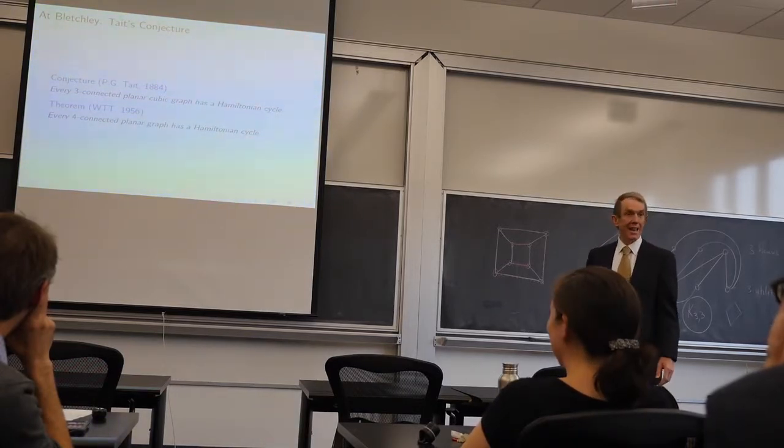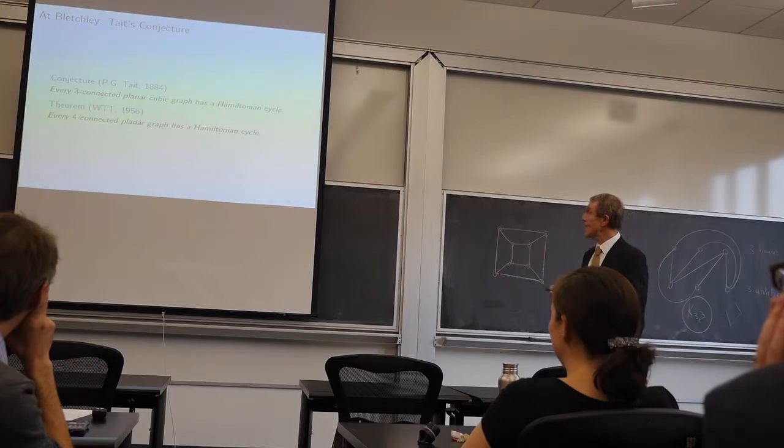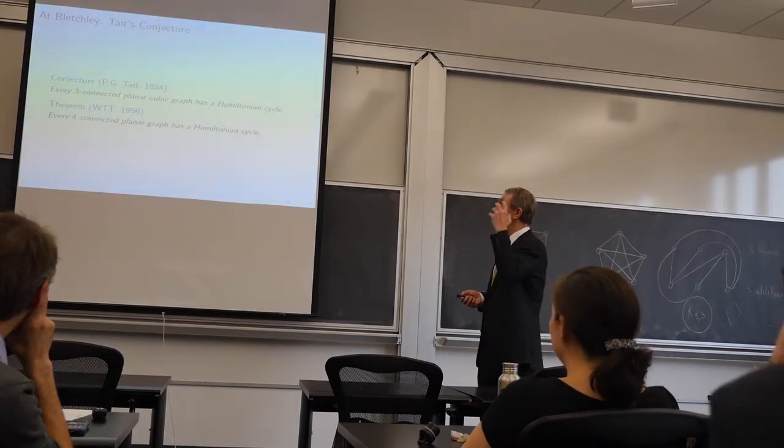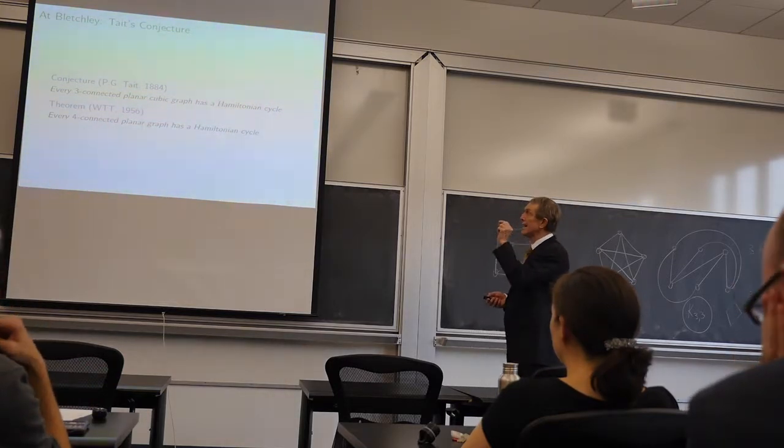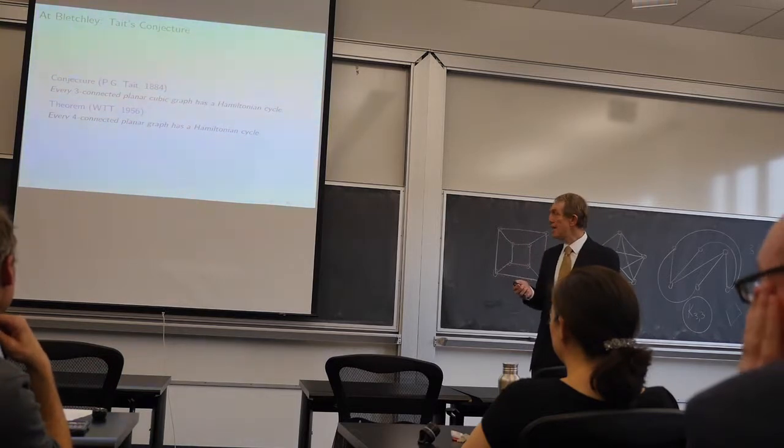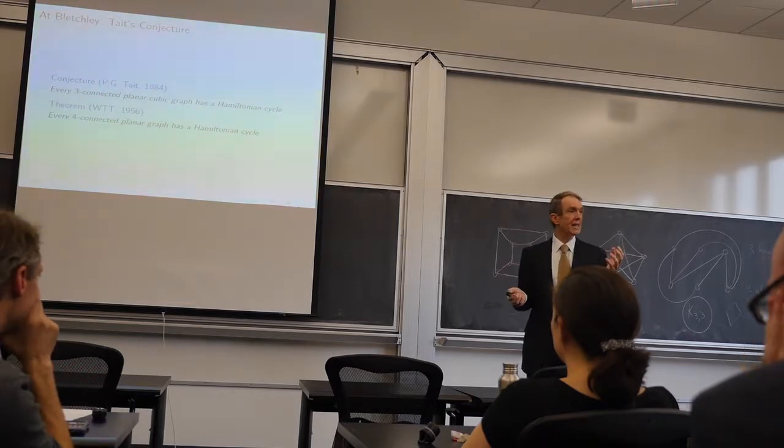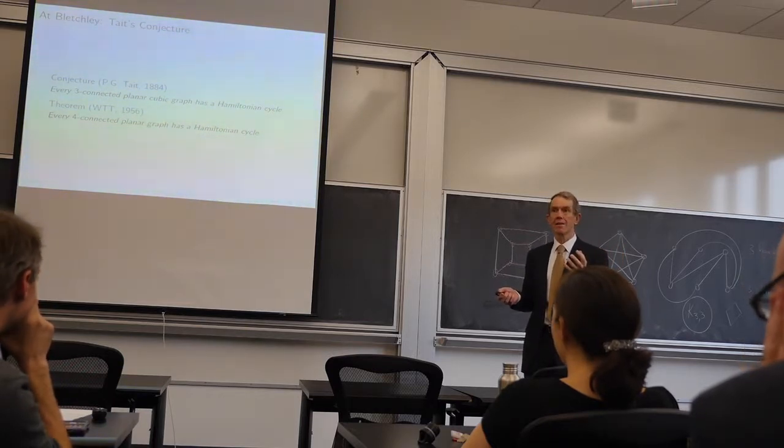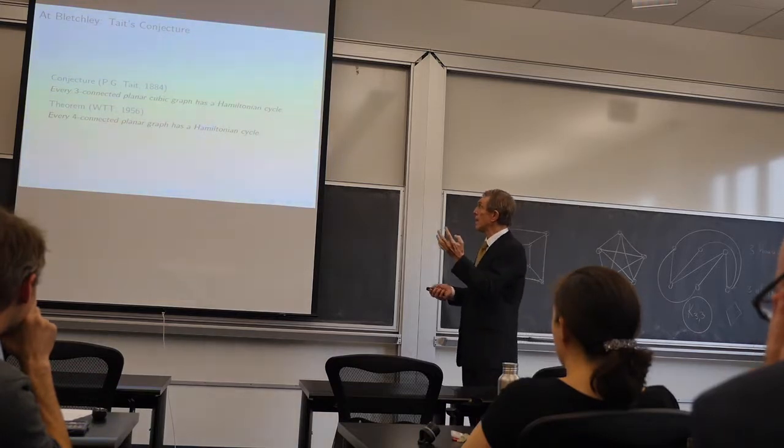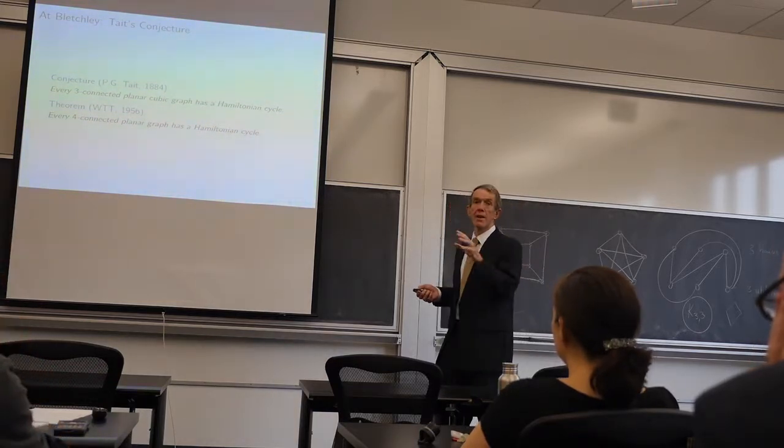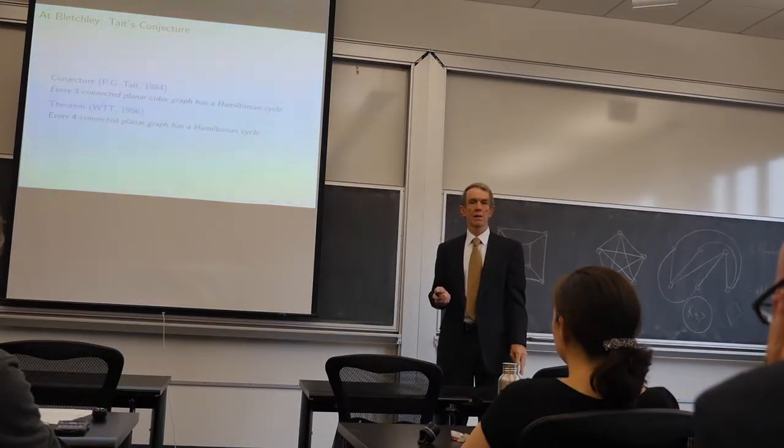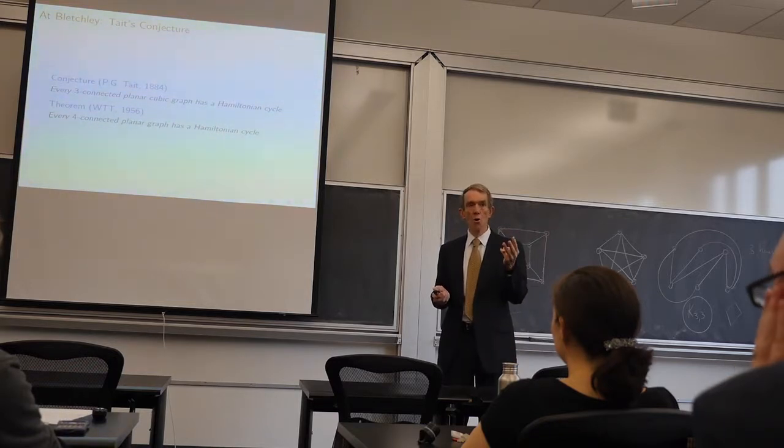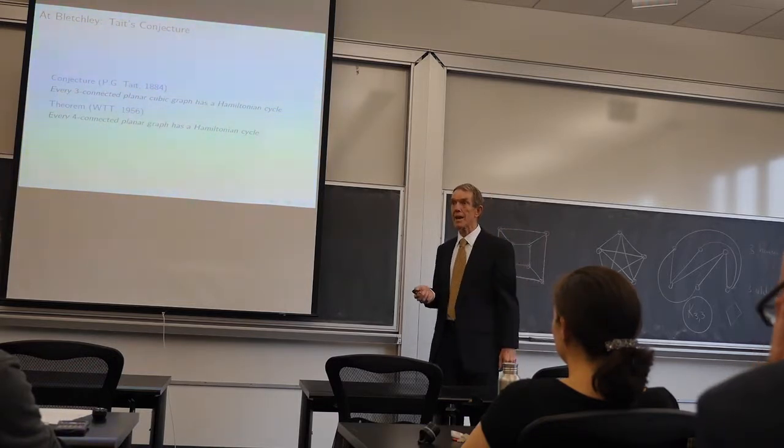So, Tutte's back to this problem in 1956. The conjecture was wrong. But the conjecture had an idea in it which was right. That planar graphs have Hamiltonian cycles as long as you make the connectivity high enough. Three connected wasn't high enough, but four connected is. What does four connected mean? How many vertices do I need to remove? At least four to disconnect.